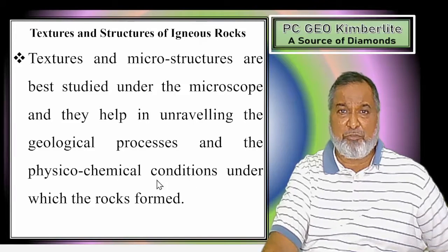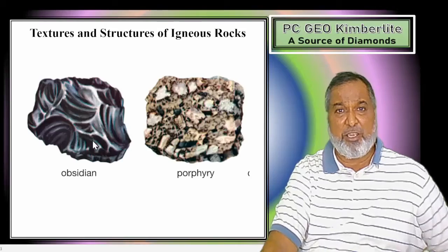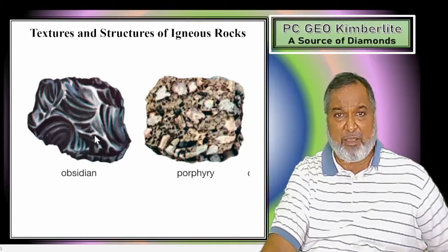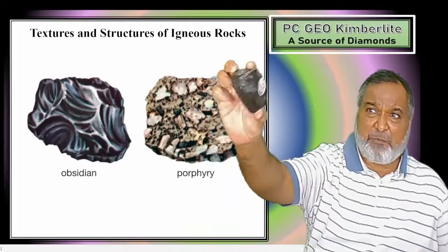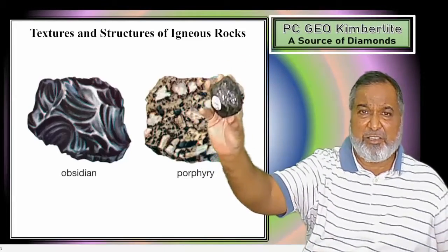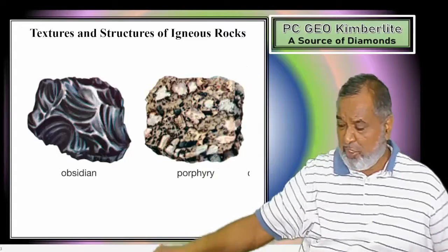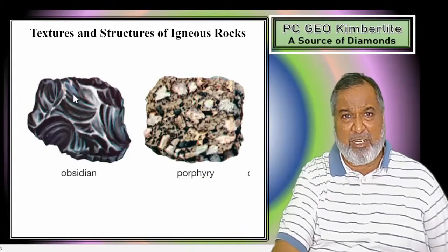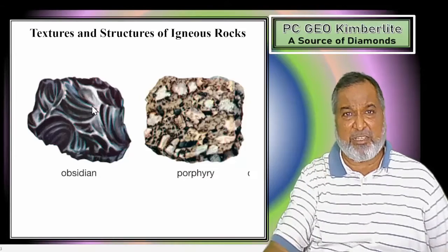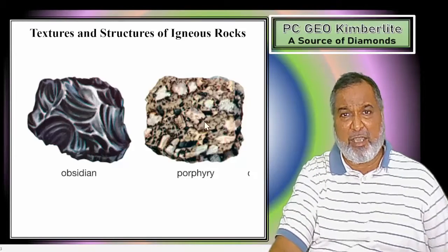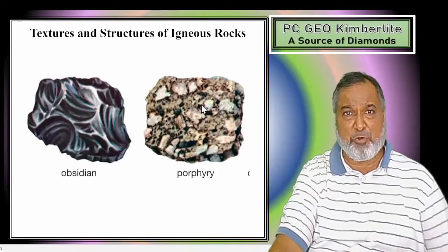For example, here we have shown you obsidian. Obsidian is a glass - 100% glass. You can see it is very clear, shining, and showing conchoidal fracture - that is very clear in that photograph. That is there and it is glass, 100% glass. The second one is for porphyritic texture. These are the things which will be shown. The next one: the four inherent characters on the basis of which the rock is going to show you textures.